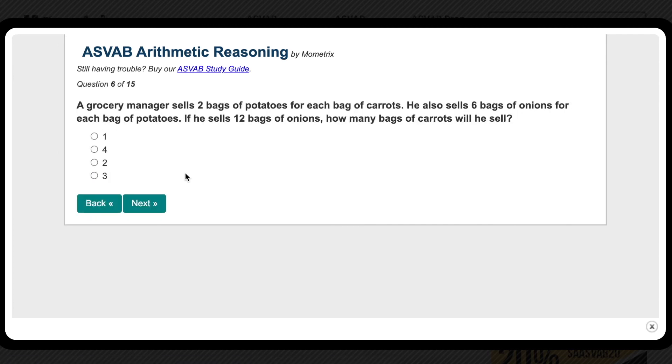All right, this is our last problem. It's a little more tricky ratios problem, but we can still use the same method. It tells us the manager is selling two bags of potatoes for each bag of carrots, then six bags of onions for each bag of potatoes. So we have something relating potatoes to carrots and potatoes to onions, but nothing directly relating the onions to the carrots. So we can use the potatoes as sort of a common link.